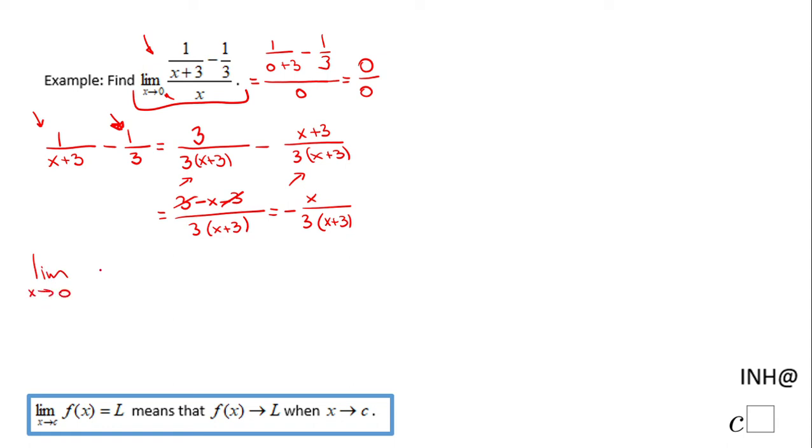This numerator is right here: -x over 3(x+3), all over x. And here you can do a simplification by canceling the x.